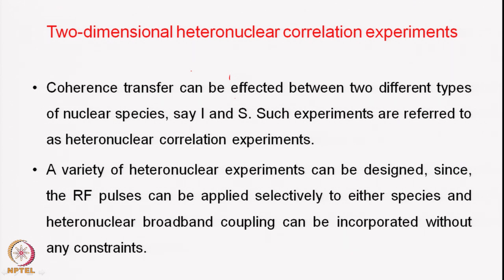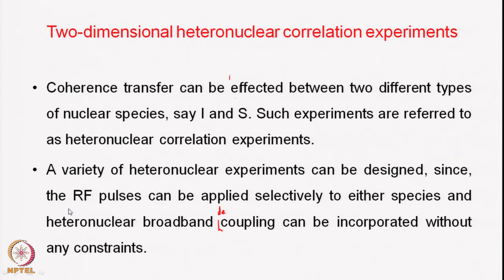You can design a variety of heteronuclear experiments because the RF pulses can be applied selectively to either species. Proton and carbon are very widely separated in terms of frequencies, therefore application of the pulses is not a problem. You can also do heteronuclear broadband decoupling without any constraints. During the indirect detection period or the evolution period where there is no acquisition going on, you can also do various kinds of decoupling tricks.